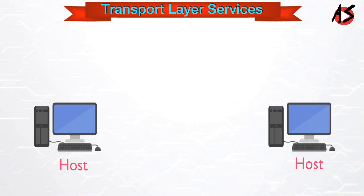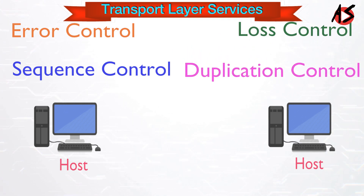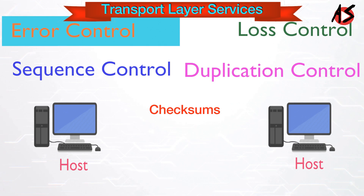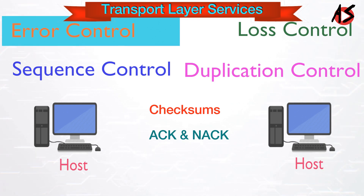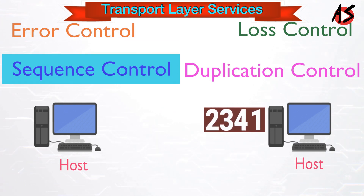The transport layer achieves reliability in terms of error control, sequence control, loss control, and duplication control. Error control means the transport layer checks for errors in messages coming from the application layer by computing checksums. It checks whether the received data is not corrupted and uses acknowledgement and negative acknowledgement to inform the sender if data has arrived correctly. Sequence control ensures that at the receiver end, various segments of the transmission can be correctly reassembled in the original order.